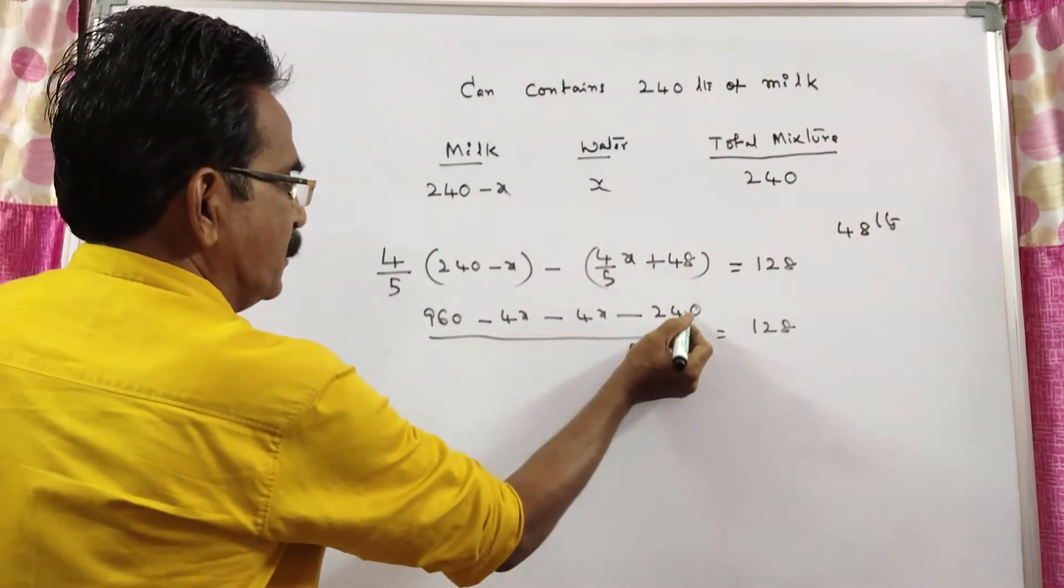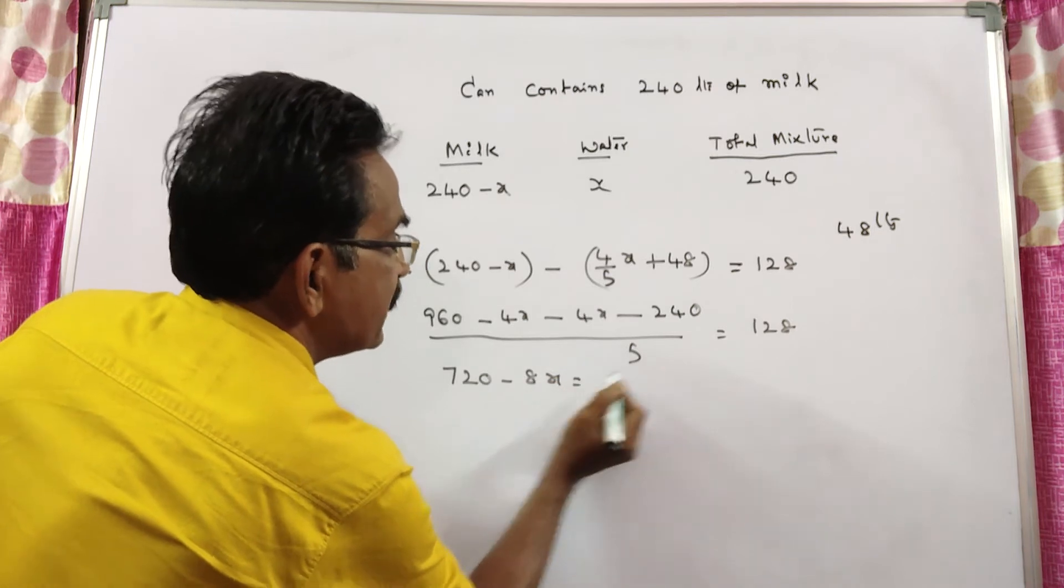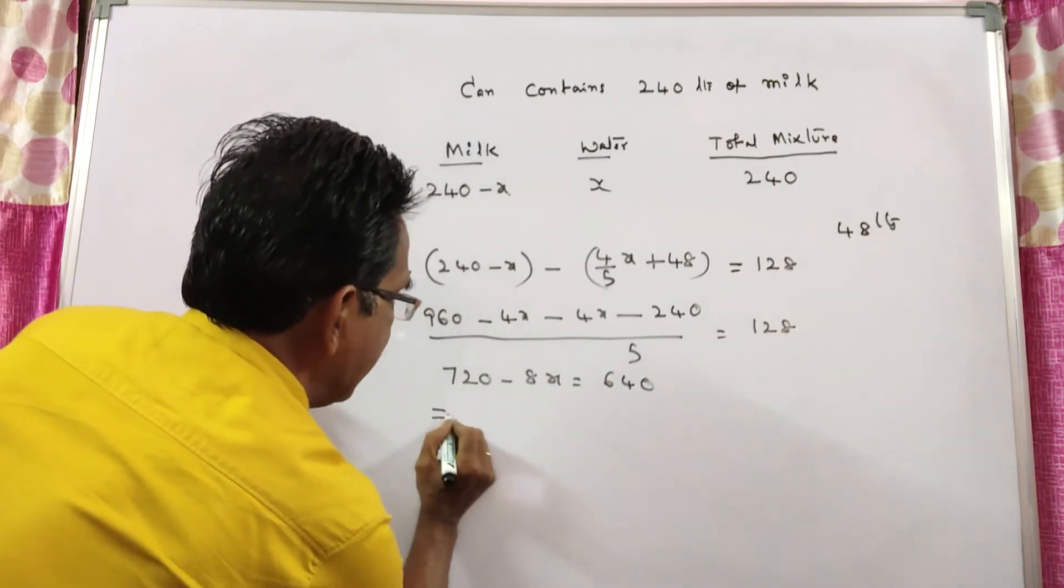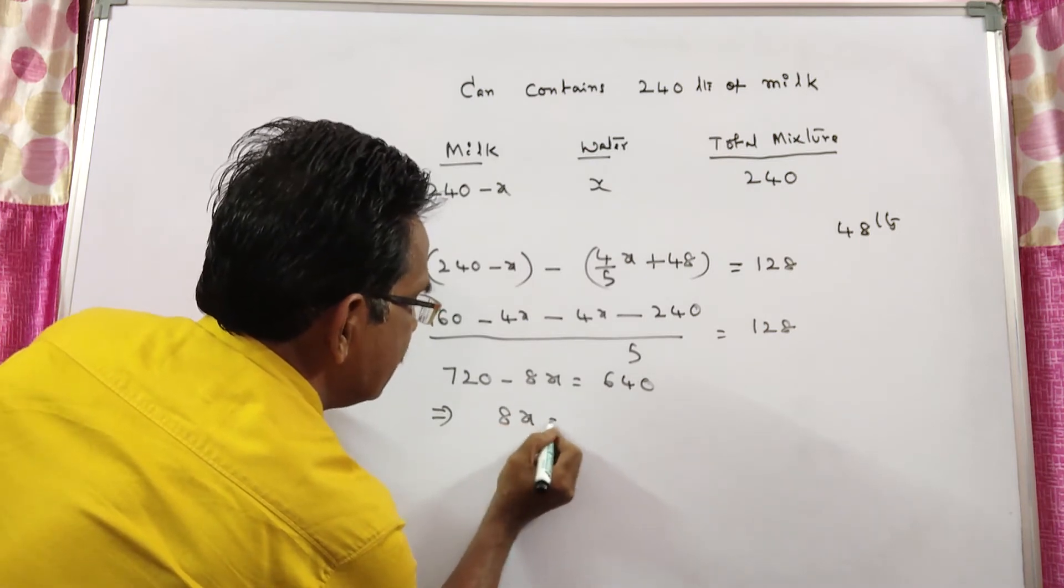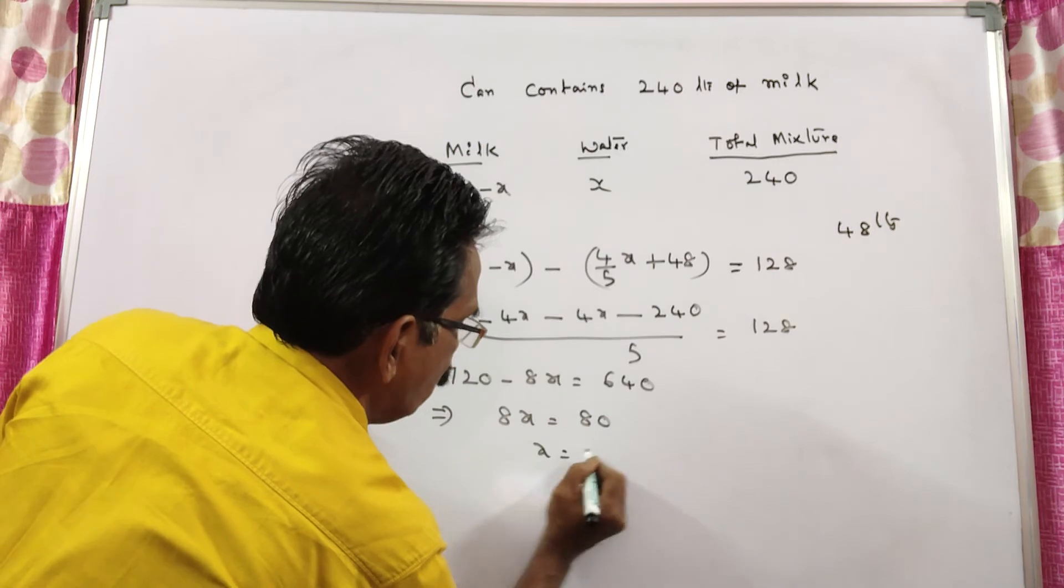960 minus 240 is 720 minus 8x is equal to 5 times 128, that is 640. It implies 8x is equal to 720 minus 640, which is 80, so x is equal to 10.